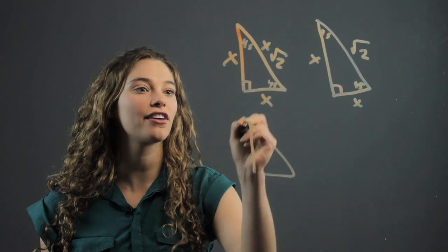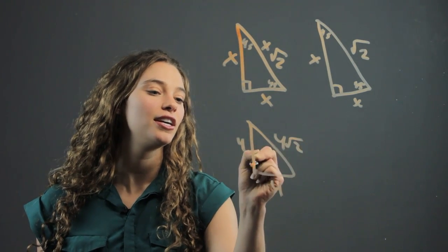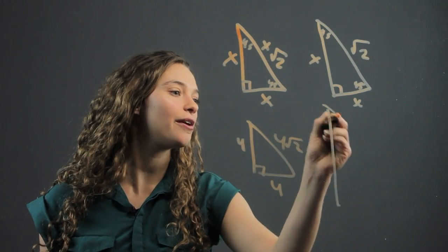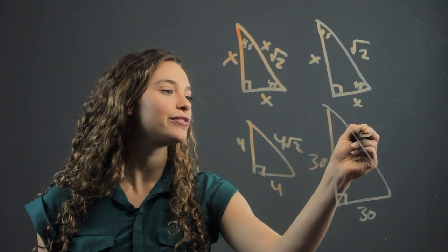This triangle here could be 4, 4, and 4 root 2. And this triangle could be huge. And it could be 30, 30, and 30 root 2.